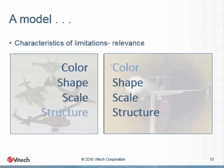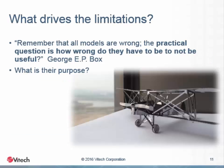The same model may be very valuable for one purpose and nearly useless for another. Answering Box's practical question boils down to the purpose of the model. The point at which a model becomes too wrong to be useful is when it crosses the line of failing to fulfill its purpose. If a model is limited in a way that makes it impossible for it to meet its purpose, then it is no longer useful.